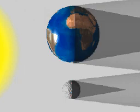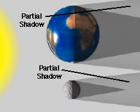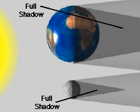Eclipses occur due to the movement of the shadows of the moon and earth. Each shadow consists of two zones: one from which part of the sunlight is blocked, and one from which all the sunlight is blocked.